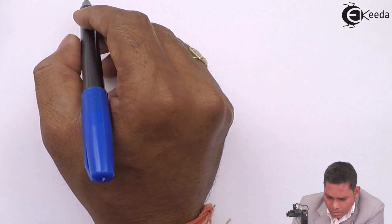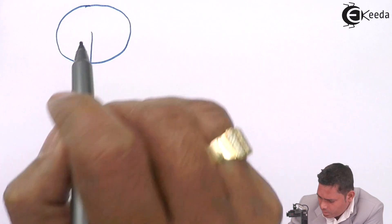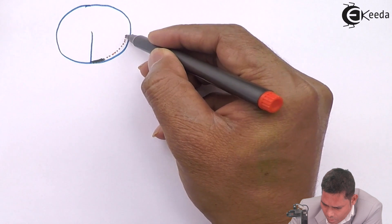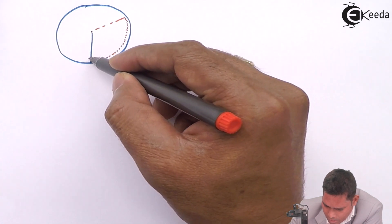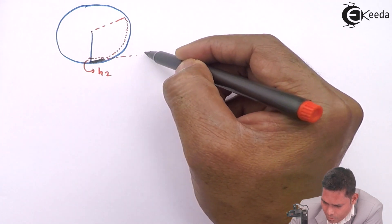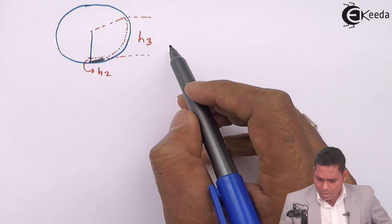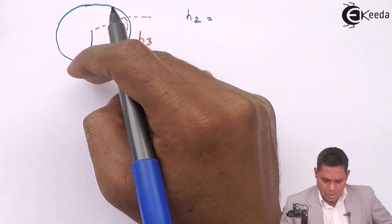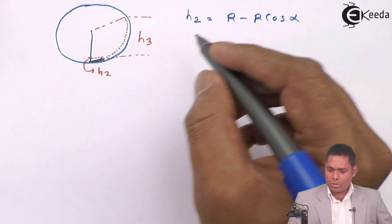For h2, I'll draw the picture again. The black liquid is up to a certain height on the right side, after which we have the red liquid. This side is h2 and from here to here is h3. h2 comes out to be r − r·cos(α). This is because from the center to this interface along the radius it is r·cos(α), and the full length is r, so h2 = r − r·cos(α).